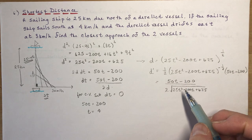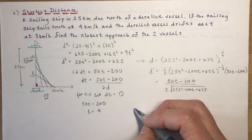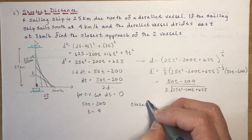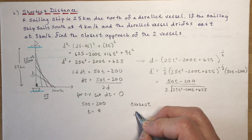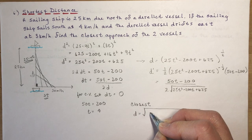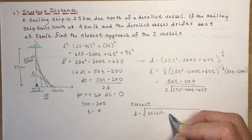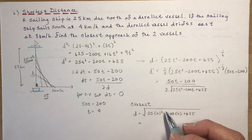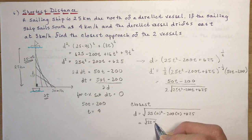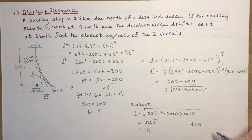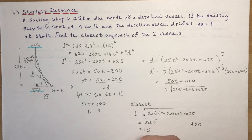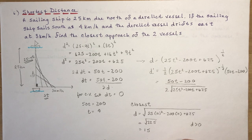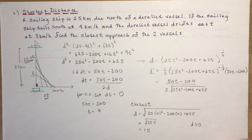The closest approach happens at 4 hours. To find that distance, substitute t equals 4 into the distance formula: the square root of 25 times 16 minus 200 times 4 plus 625. This works out to the square root of 225, which is 15. Therefore the vessels are closest at 4 hours, and that closest distance is 15 kilometers.